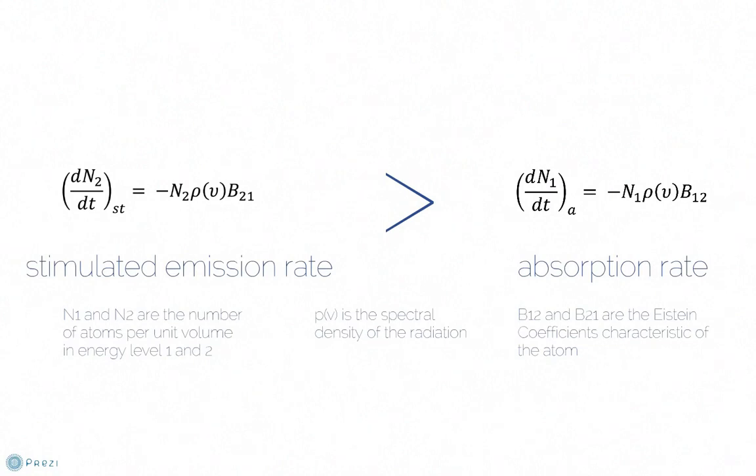In order for amplification, the rate of stimulated emission needs to be greater than the absorption rate, such that the rate of change of atoms from E2 to E1 needs to be greater than the rate of change of atoms from E1 to E2. N1 and N2 are the number of atoms per unit volume in energy levels 1 and 2. Rho is the spectral density of the radiation, which is dependent on the frequency. B12 and B21 are Einstein's coefficients, a characteristic of the atom.